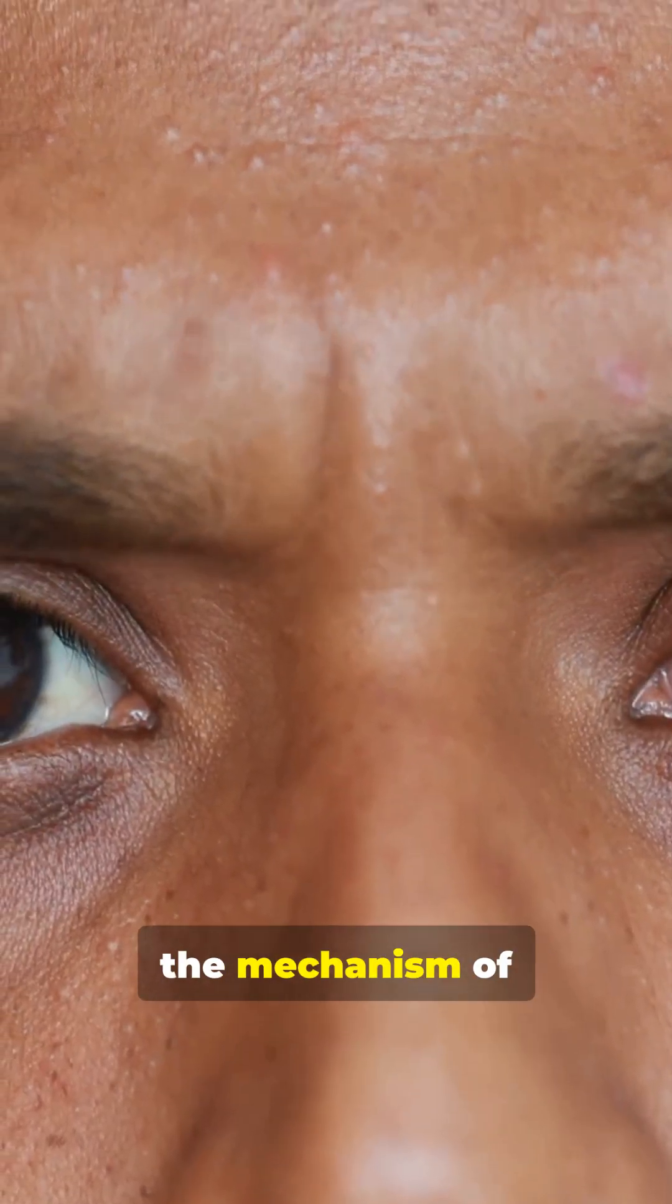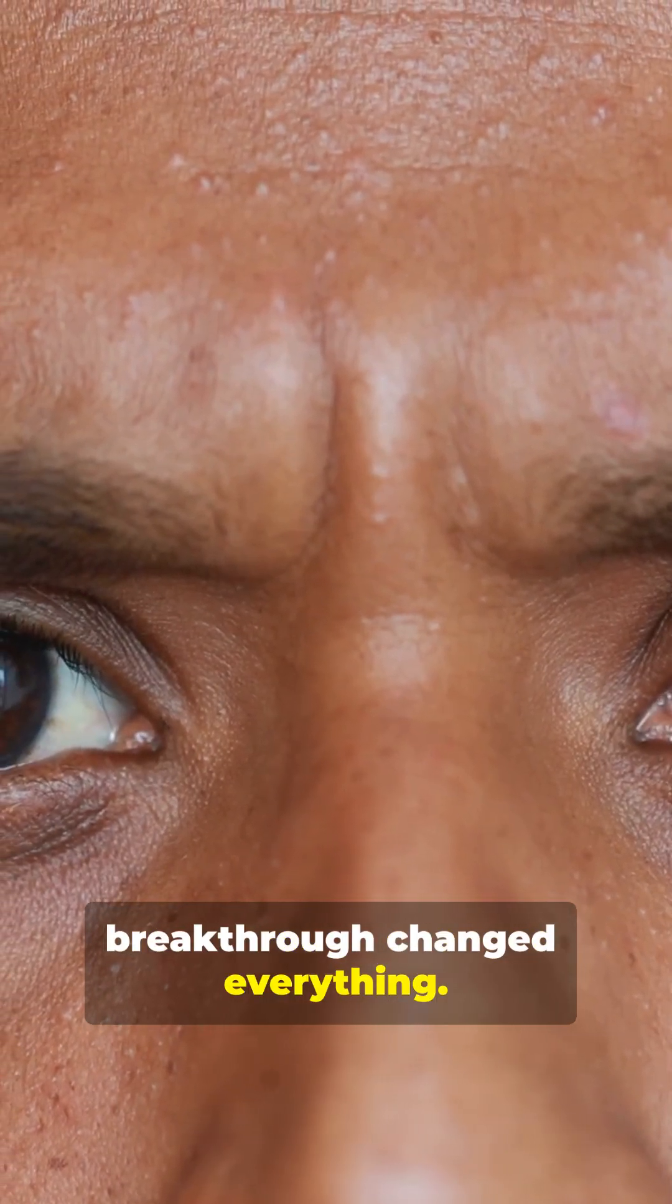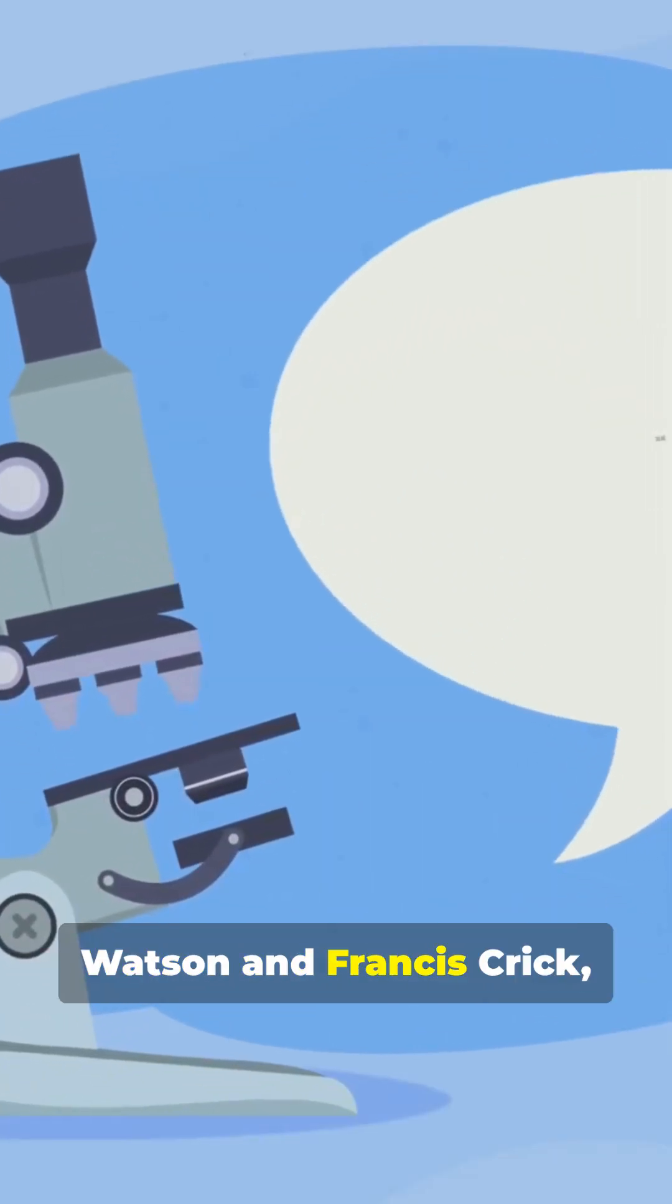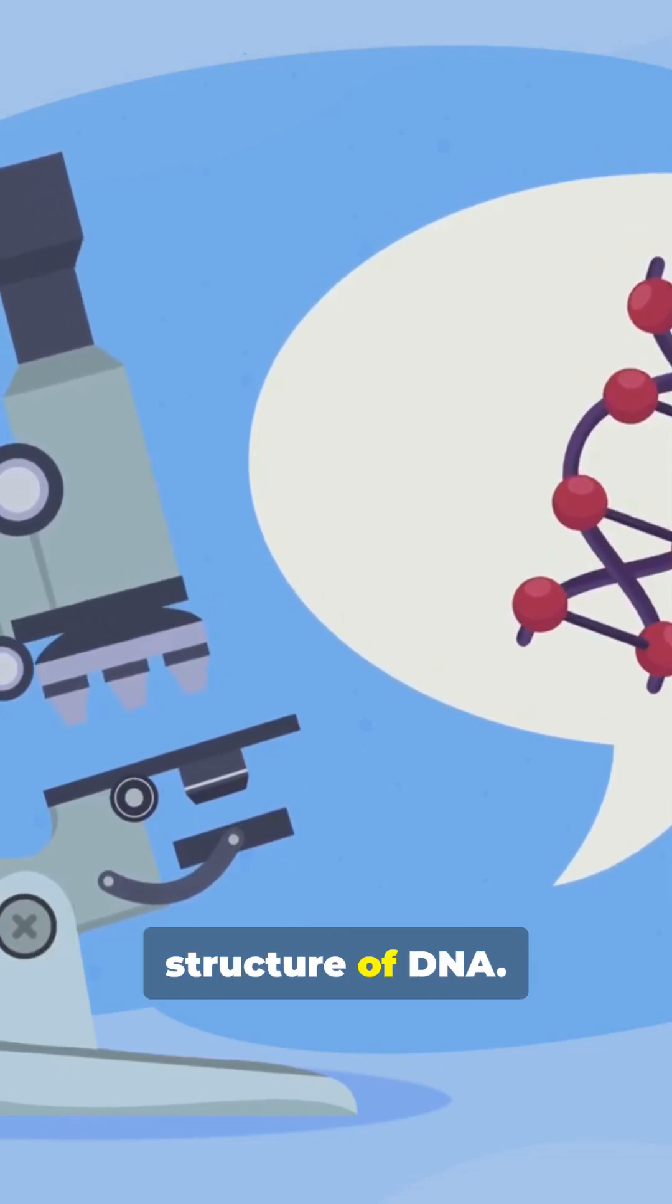For centuries, the mechanism of heredity was a mystery. But in 1953, a monumental breakthrough changed everything. Scientists James Watson and Francis Crick, using crucial data from Rosalind Franklin and Morris Wilkins, unveiled the structure of DNA.